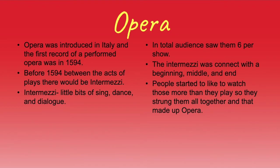In total, audiences saw six intermezzi in a play. The intermezzi were connected with the beginning, middle, and end. So you'd have your normal play where they're acting and talking back and forth, then you'd have an intermezzi, then more play, then another intermezzi, and so forth. The intermezzi told a different story than the play. People started to really like watching these much more than some of the plays, so they decided to string them all together — and that would make the first opera.